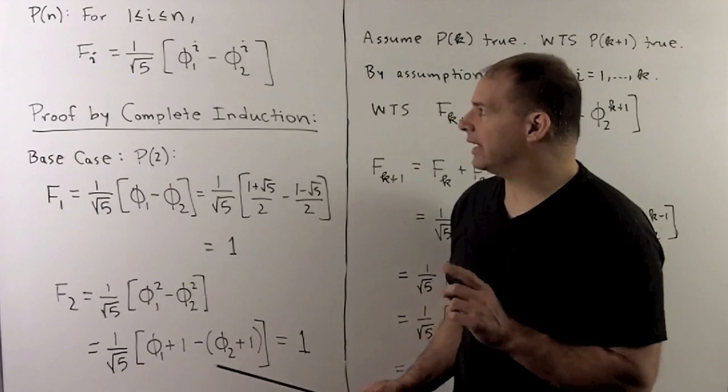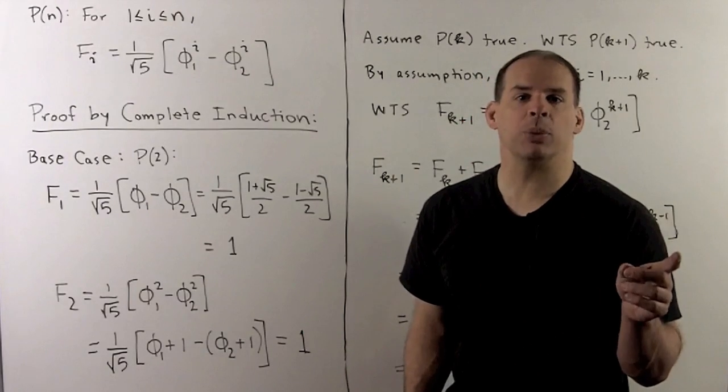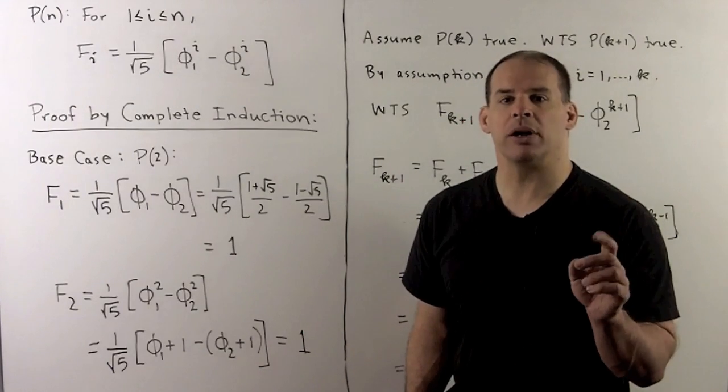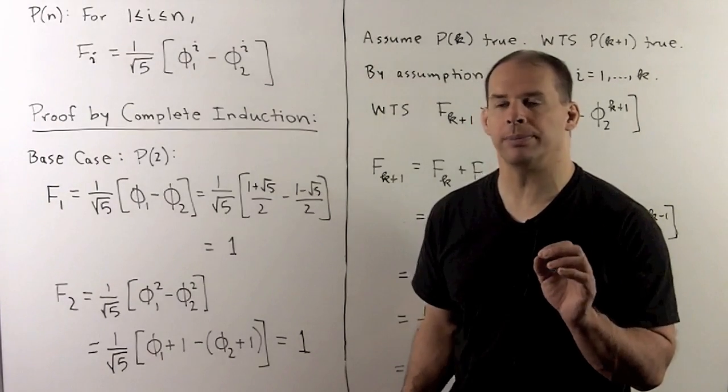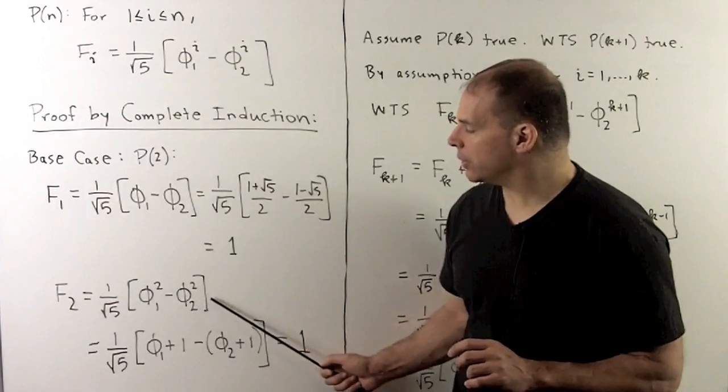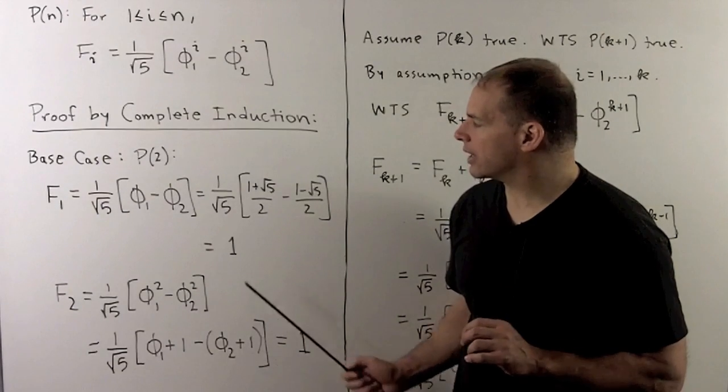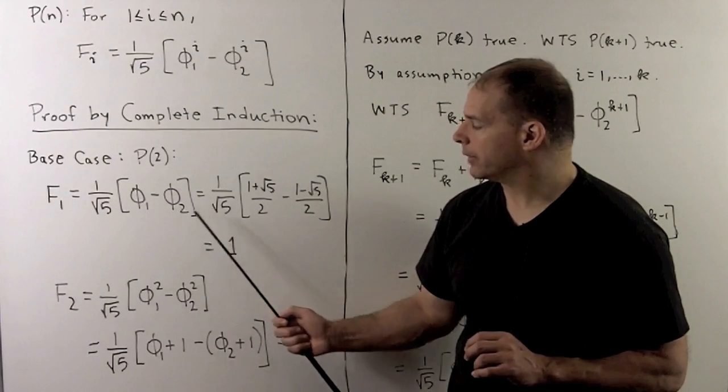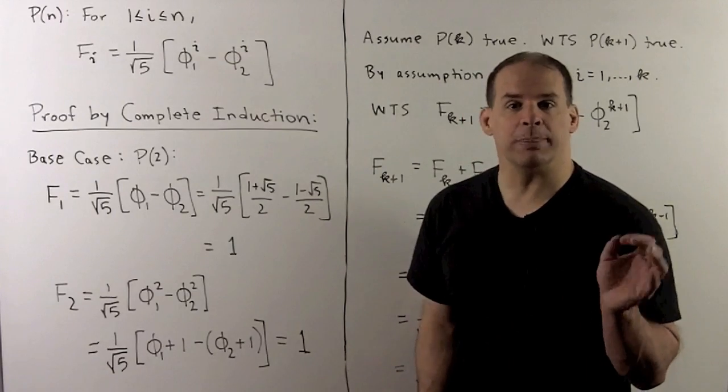For f2, same idea. Now, the exponents are equal to 2. And I can use the previous board, which says phi 1 squared equals phi 1 plus 1, phi 2 squared equals phi 2 plus 1. So, we substitute. The ones go away when we take the difference. And what we're left with is the computation for f1. So, again, we're going to get a 1. That shows the base case.